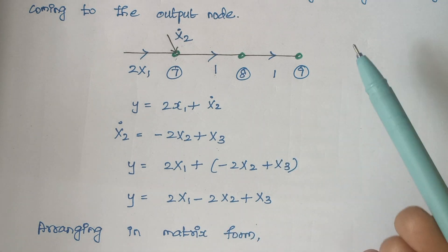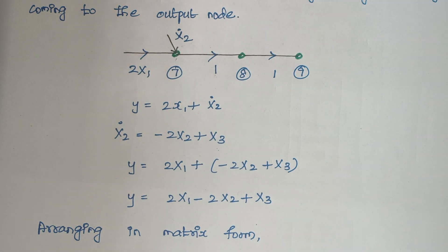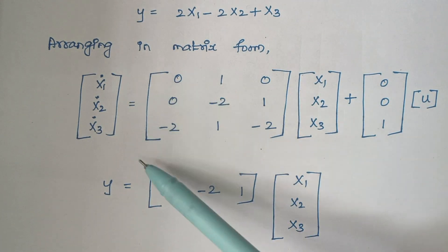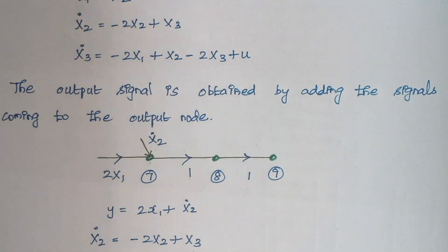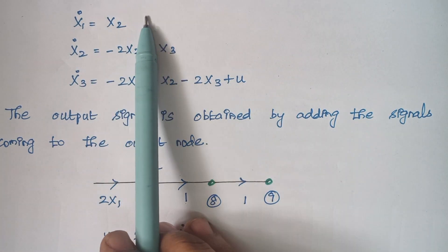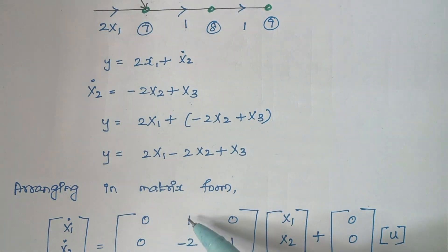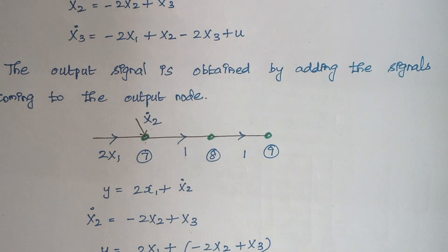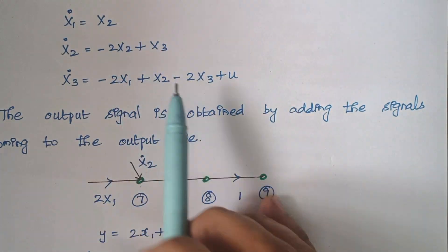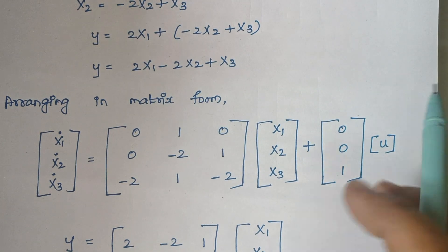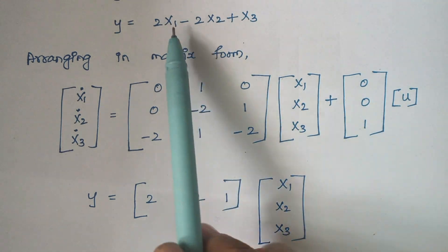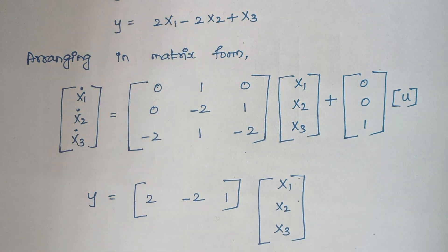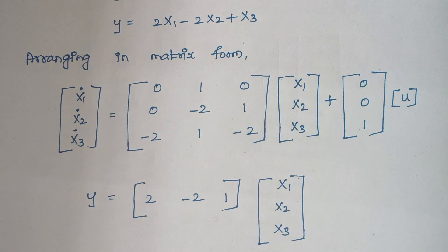Now we arrange these in matrix form. The state equation matrix has X1 dot, X2 dot, X3 dot on the left. Filling the A matrix with the respective coefficients and multiplying by [X1, X2, X3]ᵀ, plus the B matrix [0, 0, 1]ᵀ multiplied by U. For the output equation, the coefficients of X1, X2, X3 are 2, minus 2, and 1 respectively. This concludes the problem. If you have any doubt, let me know in the comment section. Thank you.